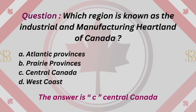Question: Which region is known as the industrial and manufacturing heartland of Canada? A. Atlantic provinces. B. Prairie provinces. C. Central Canada. D. West Coast. The answer is C. Central Canada.